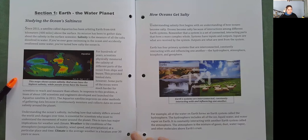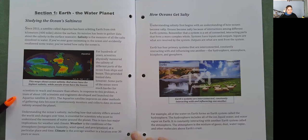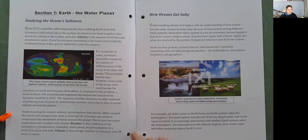Some parts of the ocean were much harder for scientists to reach and measure than others. In response to this problem, a team of about 100 scientists and engineers developed and launched the Aquarius satellite in 2011. The Aquarius satellite improves on older methods because it continuously monitors and collects data on ocean salinity around the planet. Understanding ocean salinity, including how it differs around the world and changes over time, is essential for scientists who want to understand the movement of water around the planet, which has major implications for weather and climate.